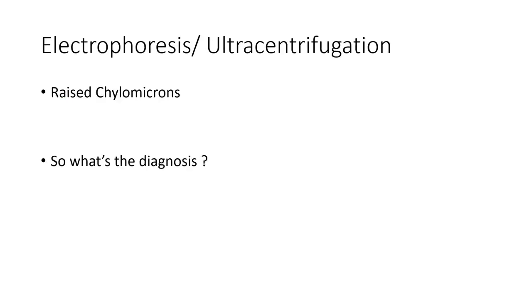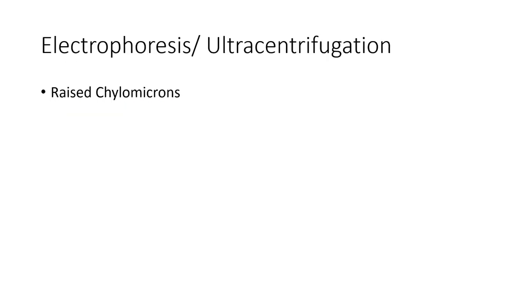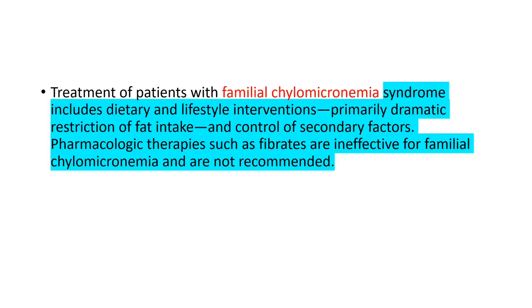The diagnosis in this case is Type 1, familial hyperchylomicronemia. The clue to search for in the question stem is raised chylomicrons only. If there are raised chylomicrons plus VLDL, it becomes Type 5, which has similar very high triglycerides, similar eruptive xanthomas, and similar pancreatitis in clinical presentation. Familial hyperchylomicronemia responds only to dietary and lifestyle intervention — specifically dramatic restriction of fat intake — and control of any secondary factors. Pharmacological therapies such as fibrates are ineffective and not recommended for Type 1 hyperlipoproteinemia.